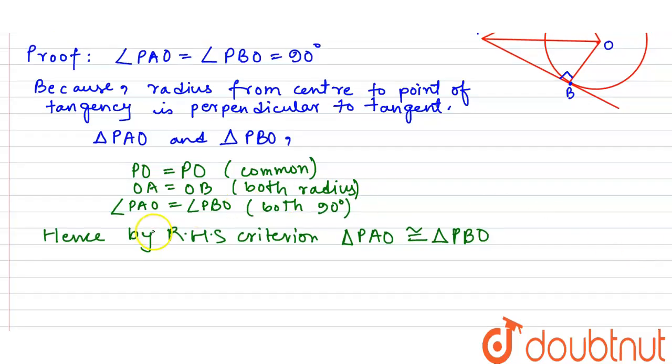Therefore, by congruent parts of congruent triangles, PA equals PB. And hence proved.